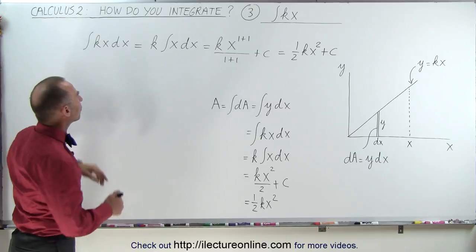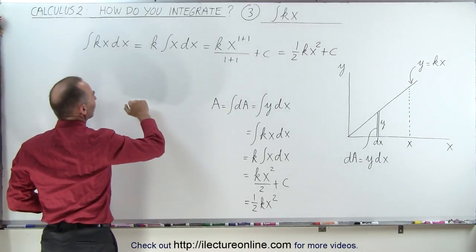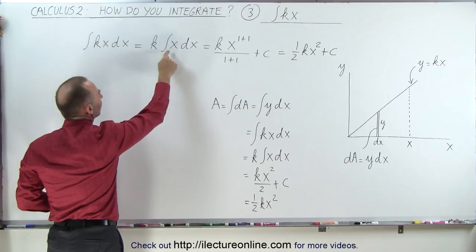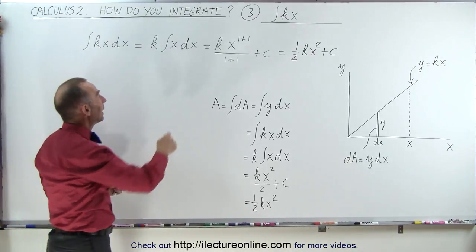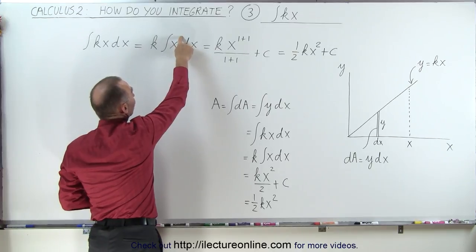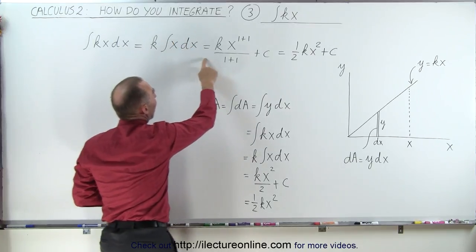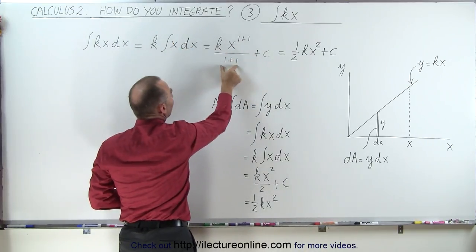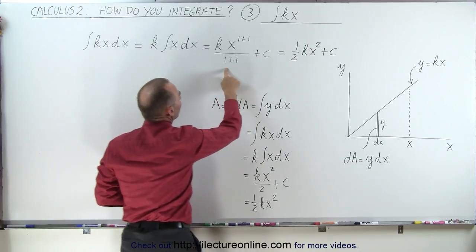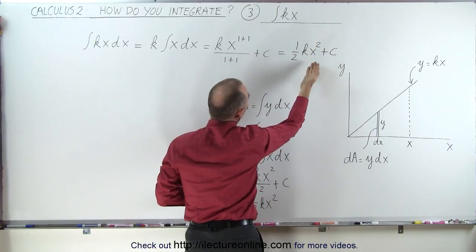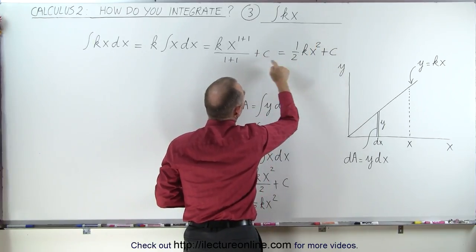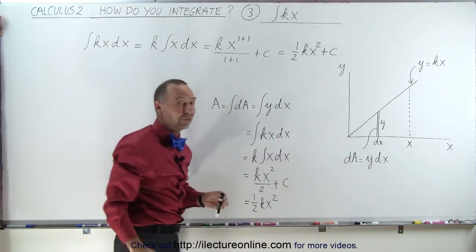Now since k is a constant, a constant can be moved outside the integral sign. So it becomes k times the integral of x times dx. The rule is when we try to integrate x to some exponent, in this case exponent is 1, we add 1 to the exponent and divide by the new exponent. So this becomes equal to kx squared divided by 2, or can be written as 1/2 kx squared, and of course we have that constant of integration.